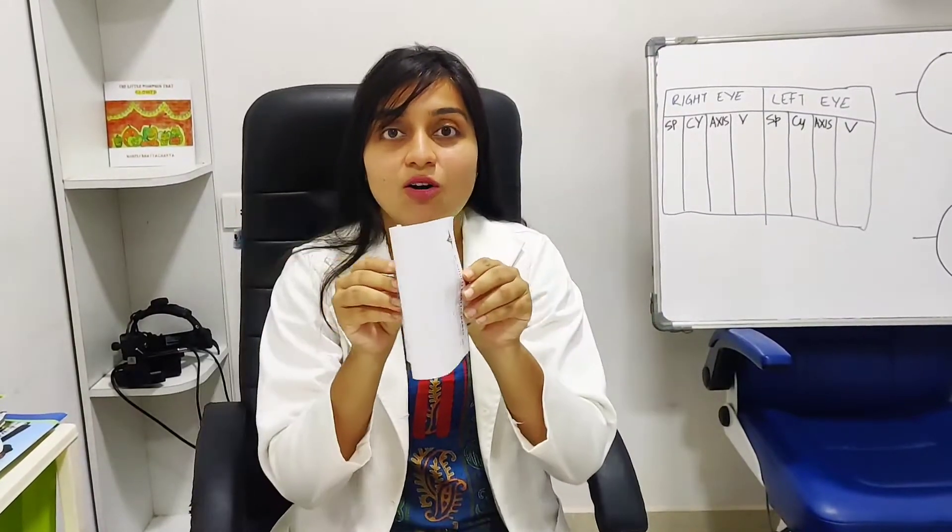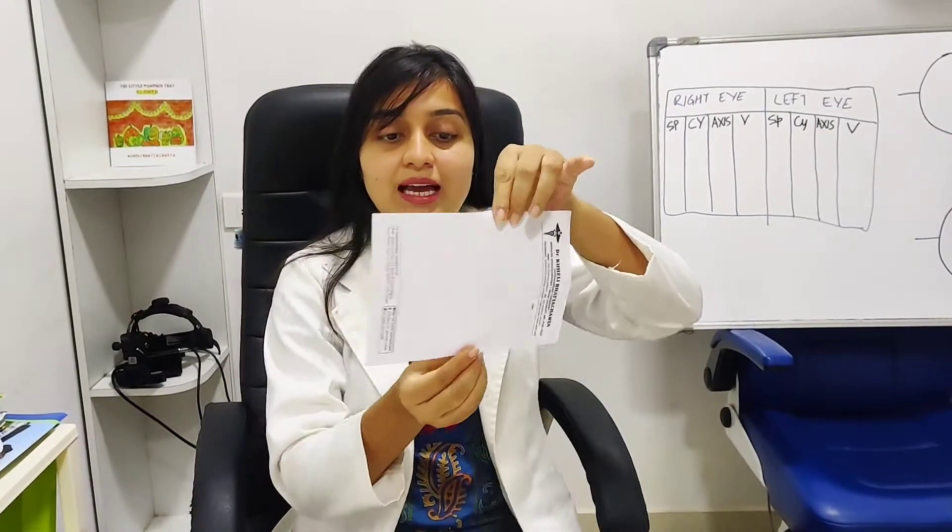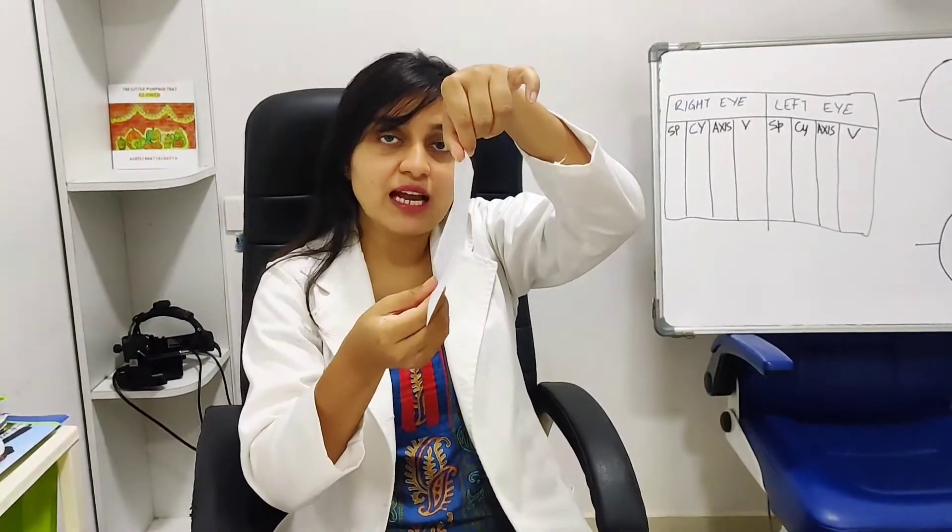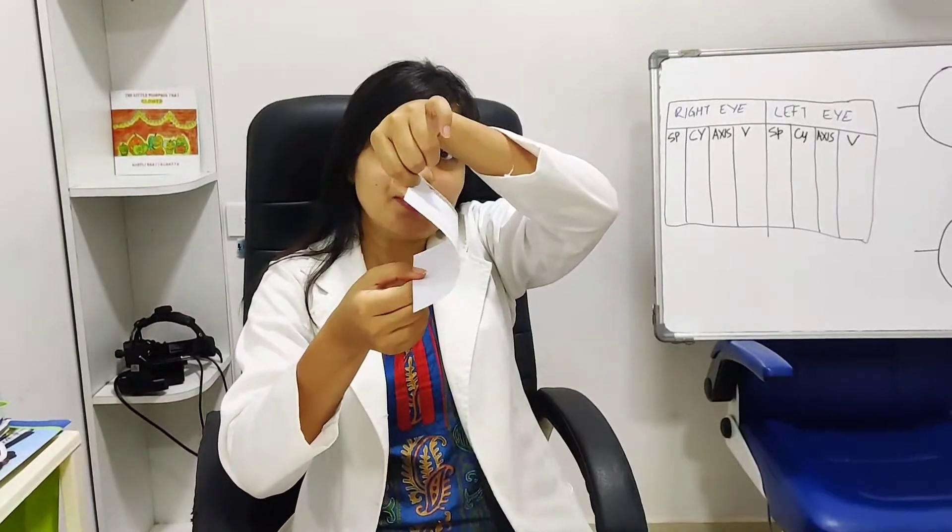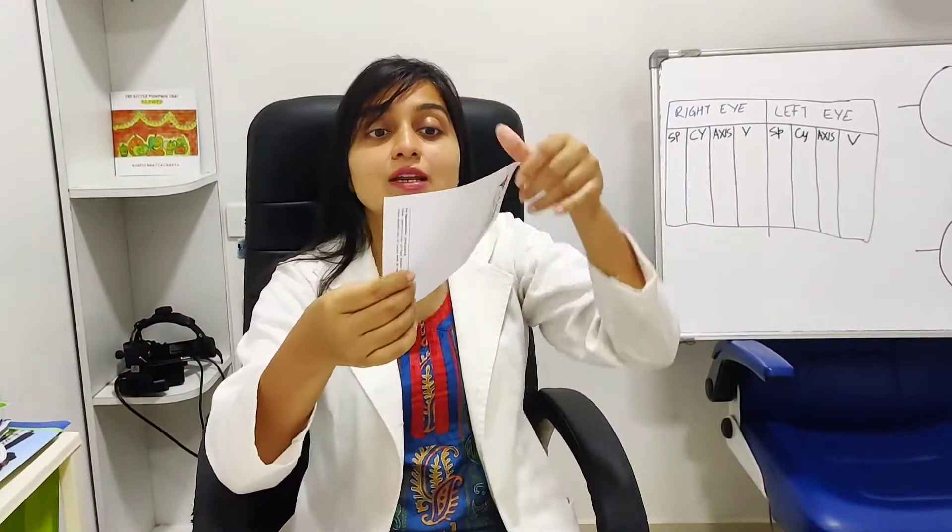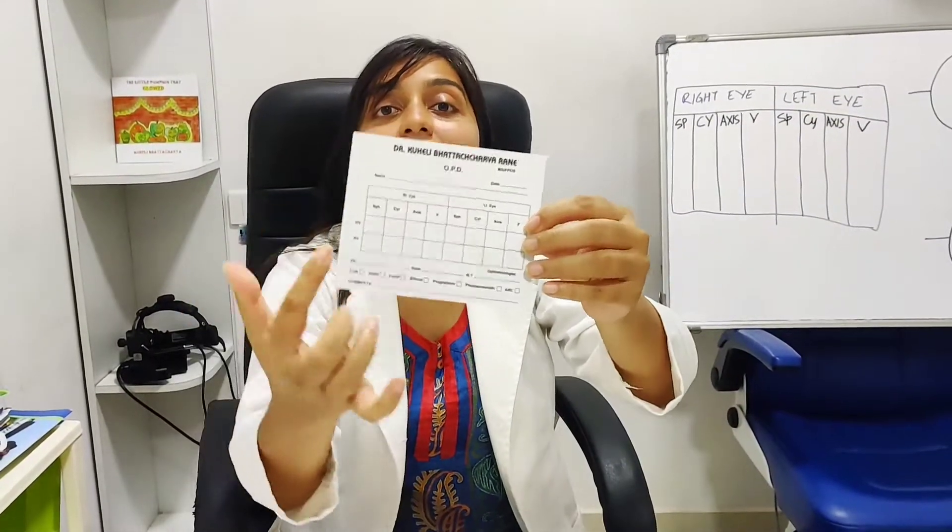So astigmatism is when we say 180 or 90 degrees. So astigmatism can be the eyeball shape, the front of the eyeball that is the cornea may be like this or it could be like this where the curve is front to back. So to explain it a little bit better, we will be explaining it on my prescription.